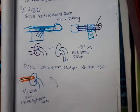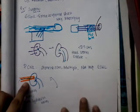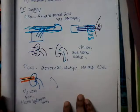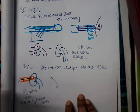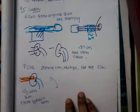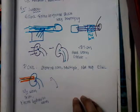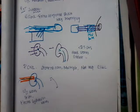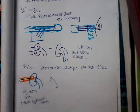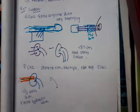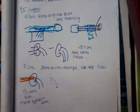The main complication of percutaneous nephrolithotomy is hemorrhage. Because many structures are passed — needle, guide wire, dilators of increasing size, and then the nephroscope — there can be complications like rupture of the ureter, perforation of the collecting duct, or injury to kidney structures.